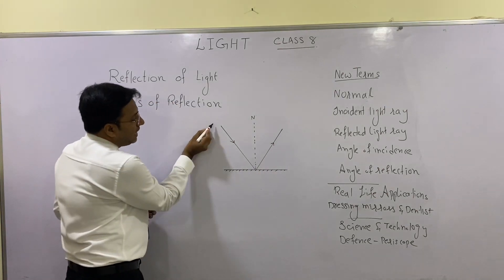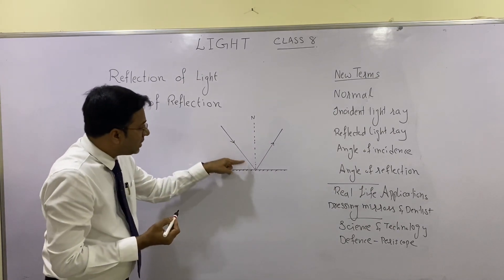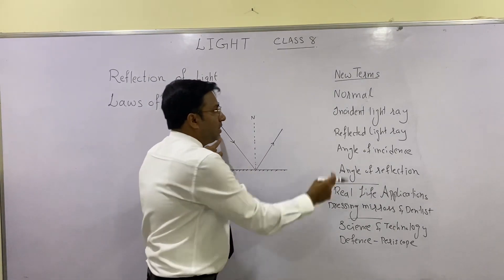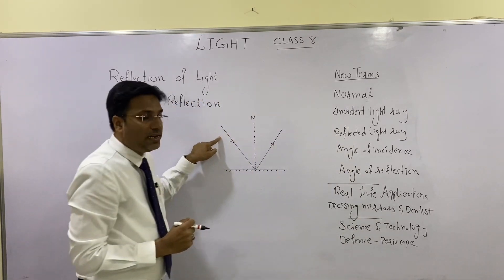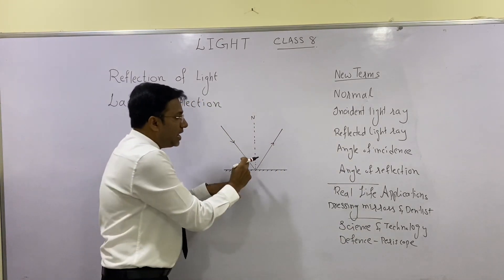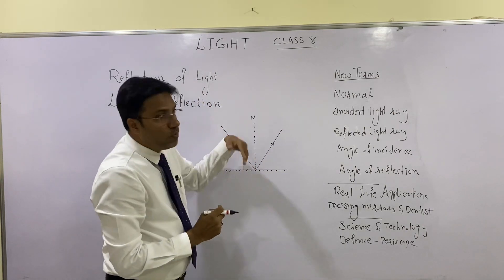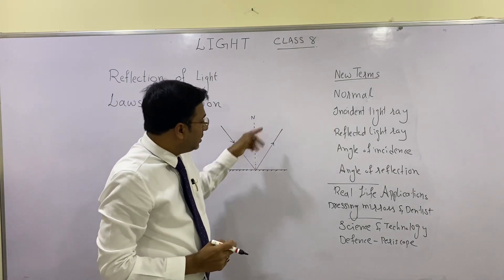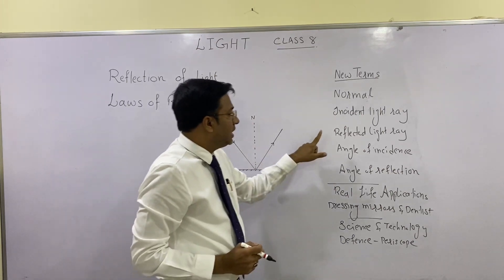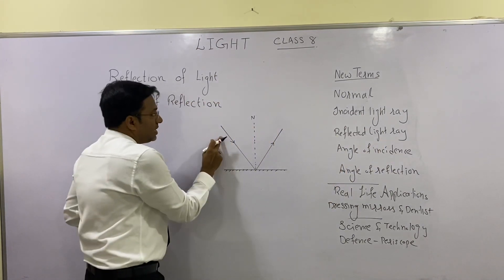Now let us consider a surface and a light ray falling on it. This light is called the incident light ray. After falling on the surface, the light ray bounces back — it moves away. This light ray is called the reflected light ray.